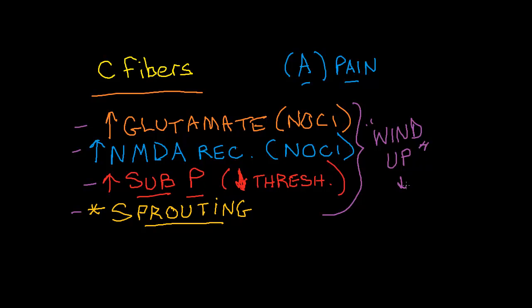So the dorsal horns have a lower threshold for processing and receiving nociception.